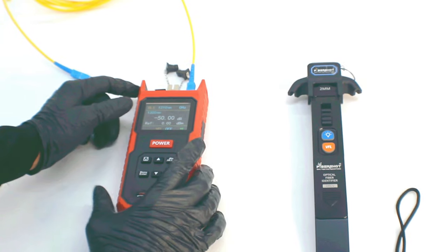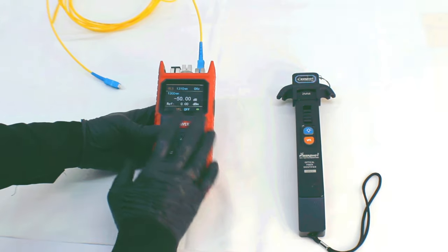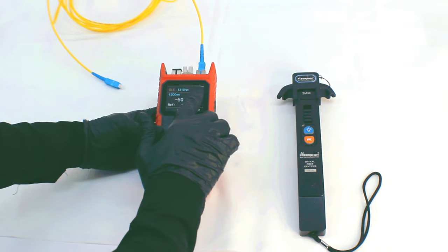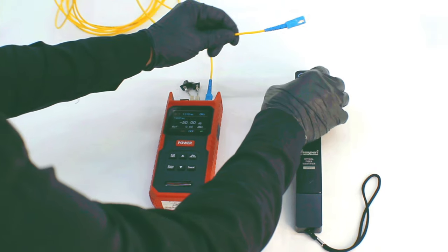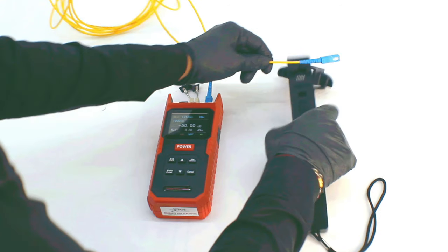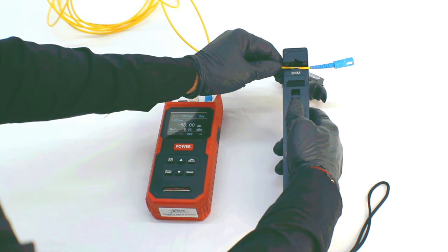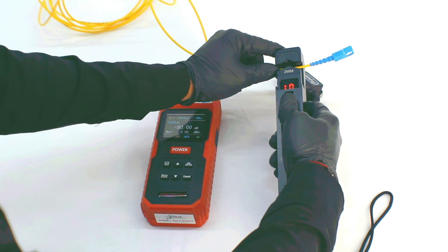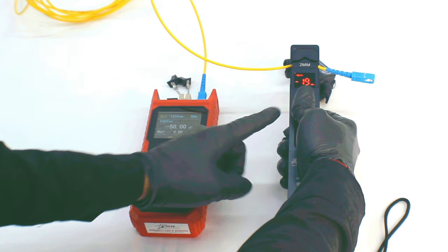Now we will check the performance. We are using an OPM of the Ultima, and we are using the laser source of this 3-in-1 power meter. Now I am putting my patch cord into the identifier to see the flow of the signal.